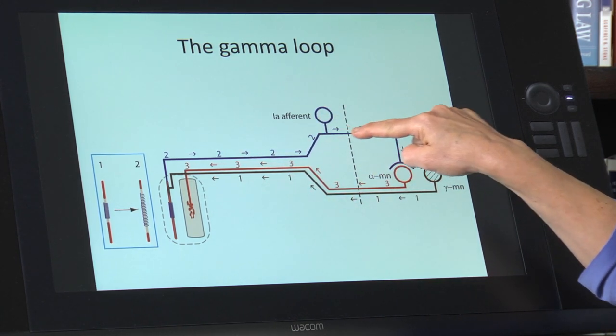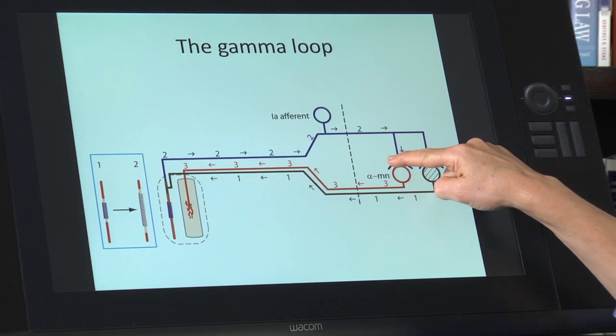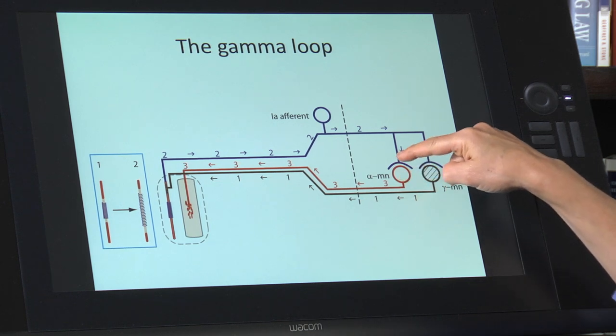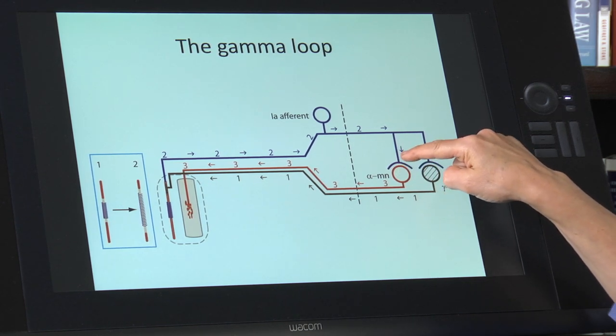They come in, they go right past the soma into the central nervous system, and they terminate on an alpha motor neuron. Now there's a synapse here.